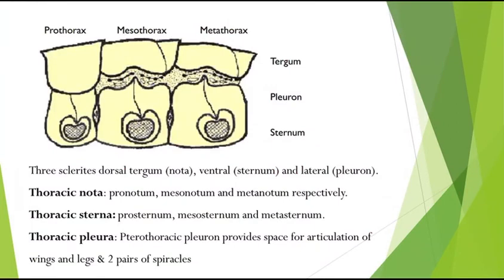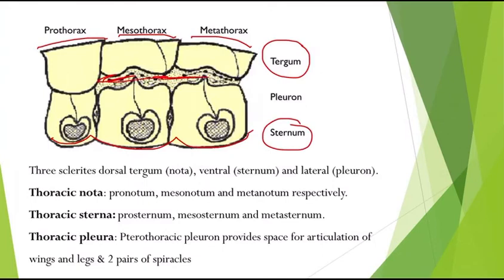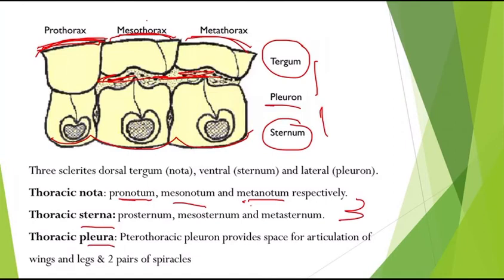The regions of the thorax are: dorsal sclerites called the tergum, ventral sclerites called the sternum, and the lateral part between the tergum and sternum called the pleuron. Since the thorax is divided into pro-, meso-, and metathorax, the dorsal side of the prothorax is called pronotum, of the mesothorax mesonotum, and of the metathorax metanotum. The same naming convention applies for the sternum and pleura.